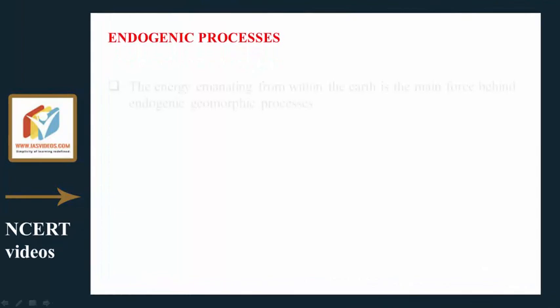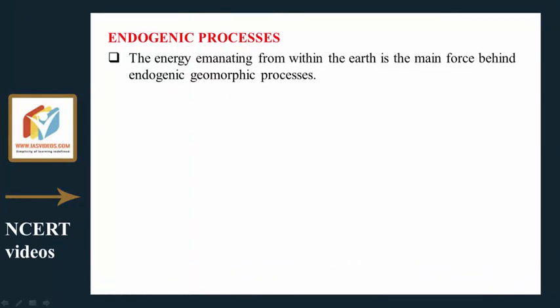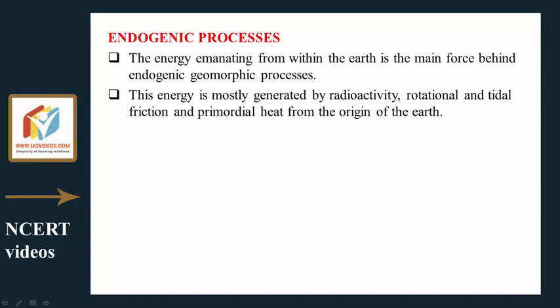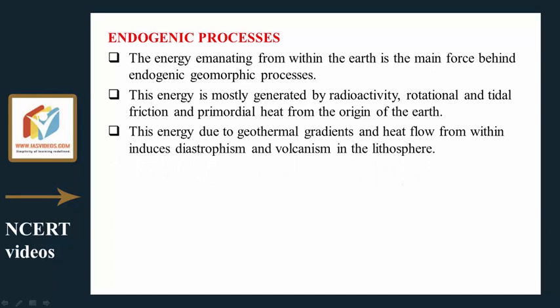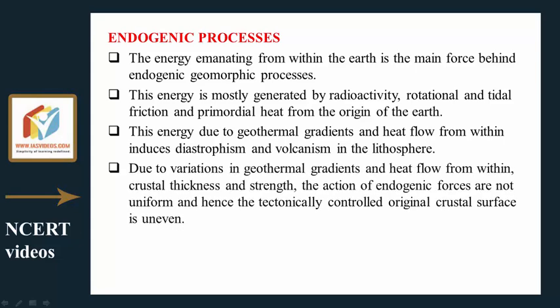The energy emanating from within the earth is the main force behind endogenic geomorphic processes. This energy is mostly generated by radioactivity, rotational and tidal friction, and primordial heat from the origin of the earth. Due to geothermal gradients and heat flow from within, diastrophism and volcanism are induced in the lithosphere. Variations in geothermal gradients, heat flow, crustal thickness, and strength make the action of endogenic forces non-uniform, leaving the original crustal surface uneven.